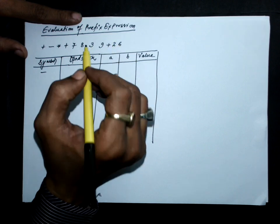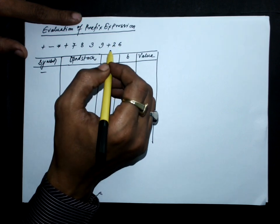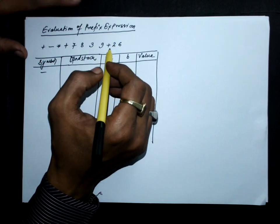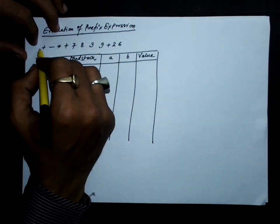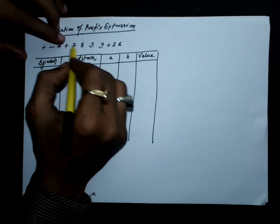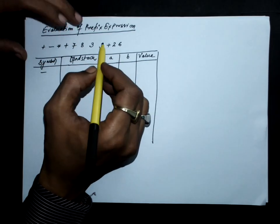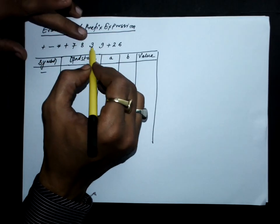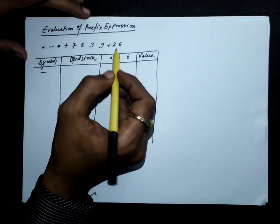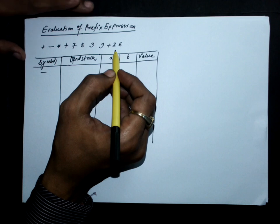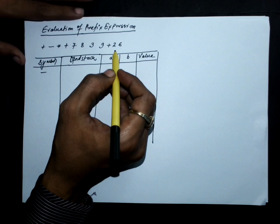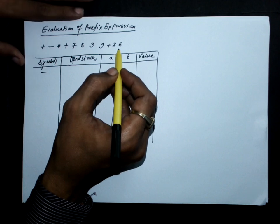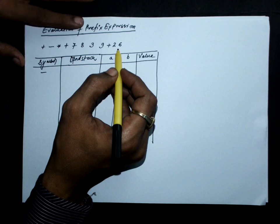First, let's check how many operators we have: 1, 2, 3, 4, 5. And how many operands are there: 1, 2, 3, 4, 5, 6. So, operands should be one more than the number of operators if all the operators are binary operators.